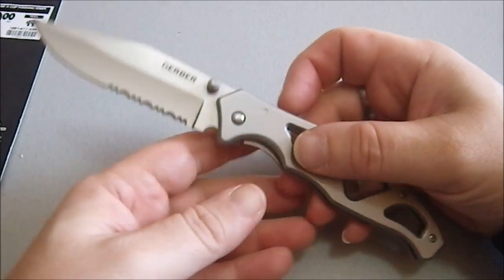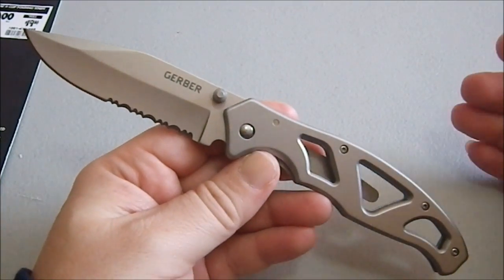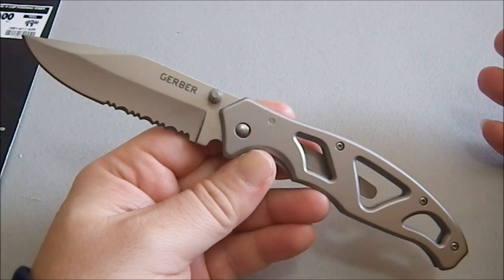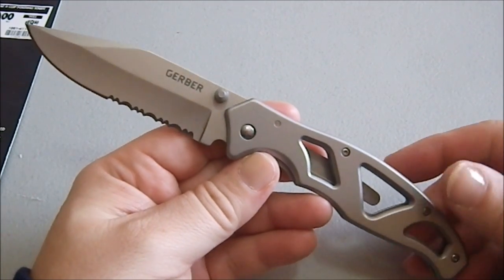I don't know if this is a characteristic of all Para Frame 2s or if this is just this knife's quirks. I also don't know the difference between the Para Frame 1 and Para Frame 2. If someone could point that out to me, that would be cool.